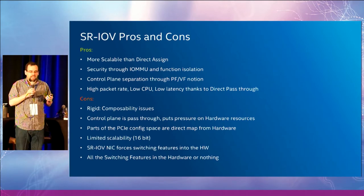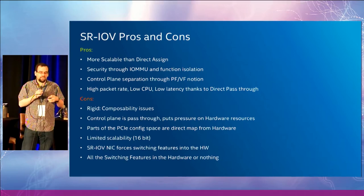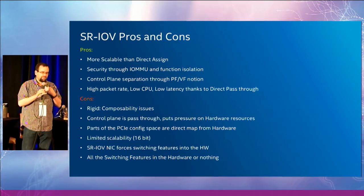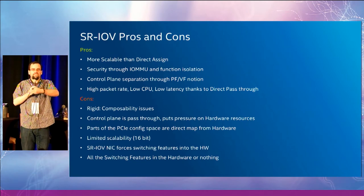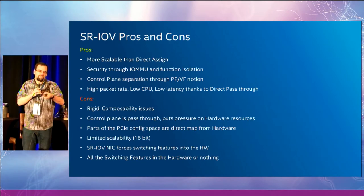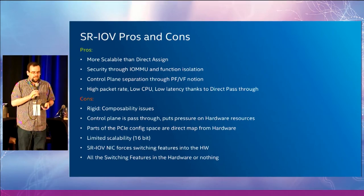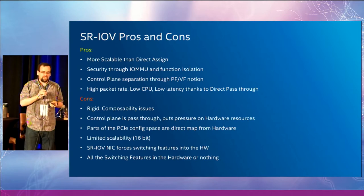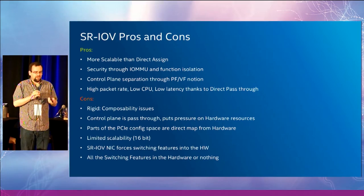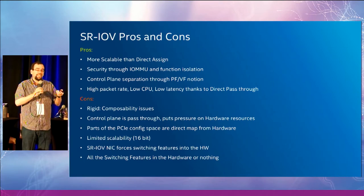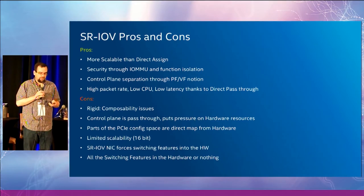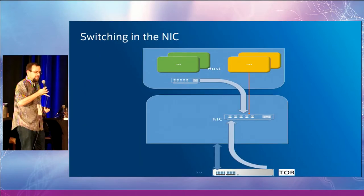Another issue is SR-IOV forces a lot of switching features into the NIC, making it more difficult to see and debug what's going on. With OVS or Bridge we could just go promiscuous mode and analyze some ports. With SR-IOV you lose that functionality because everything bypasses you — if traffic goes to a VF, it goes to the VF and bypasses the PF, which has no visibility into that. Everything in terms of switching ends up being either all in the hardware or nothing. Just a year ago I was having to fix the fact that promiscuous mode for VLANs didn't really work in Intel hardware when this was all enabled.